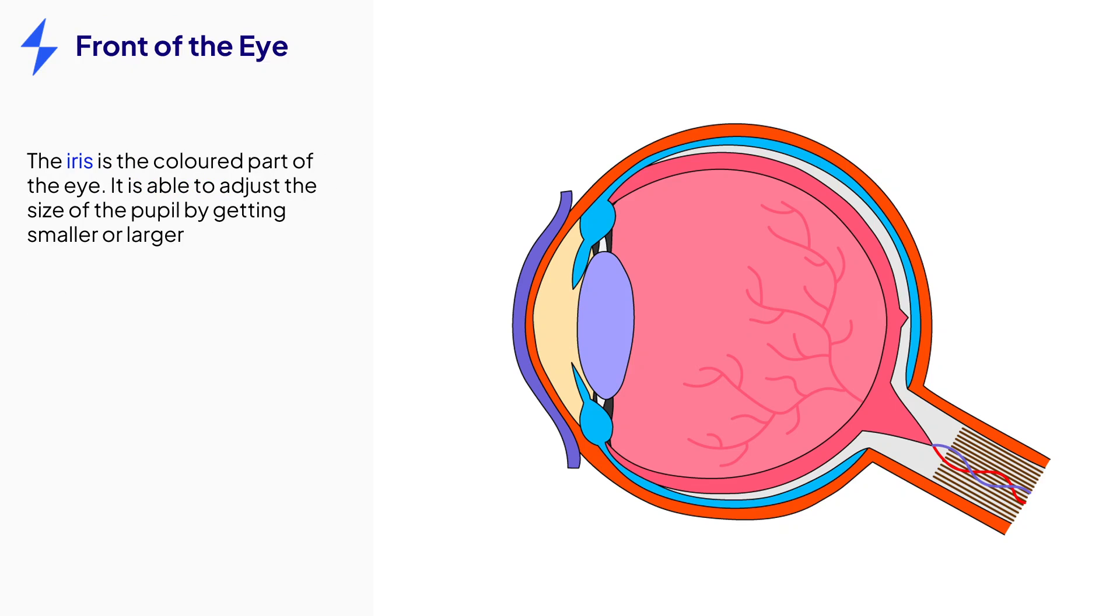There are several structures at the front of the eye. The frontmost part behind the cornea is the iris. The iris is the colored part of the eye that is able to change shape to adjust the size of the pupil. The pupil is the hole in the center of the iris that lets light into the eye. By changing shape, the iris is also able to adjust the amount of light entering the eye through the pupil.